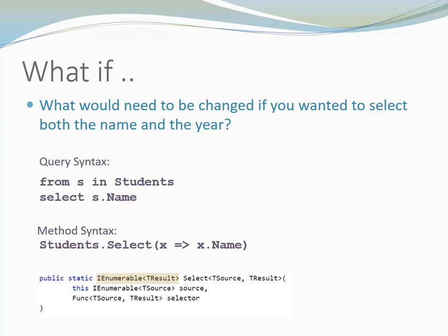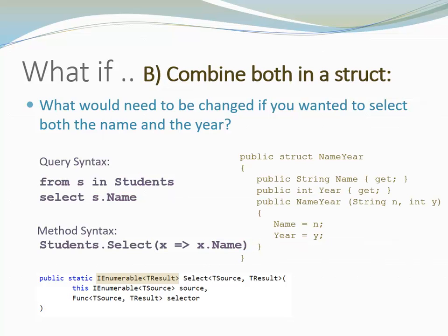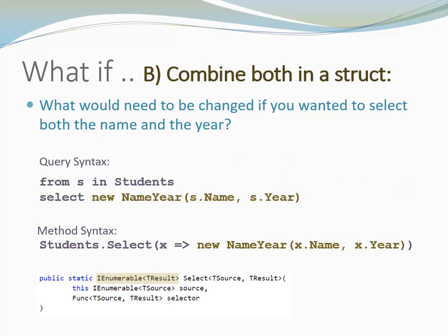There are different ways to do that. One approach would work, however, there is a significant disadvantage: in order to access the name or year later, we would need to parse the string. We could also create a struct that has two properties, a name and a year, and that would change our query accordingly. Accessing name and year would no longer be a problem. However, it would require us to create an extra data type that might have no usefulness except in that specific context.